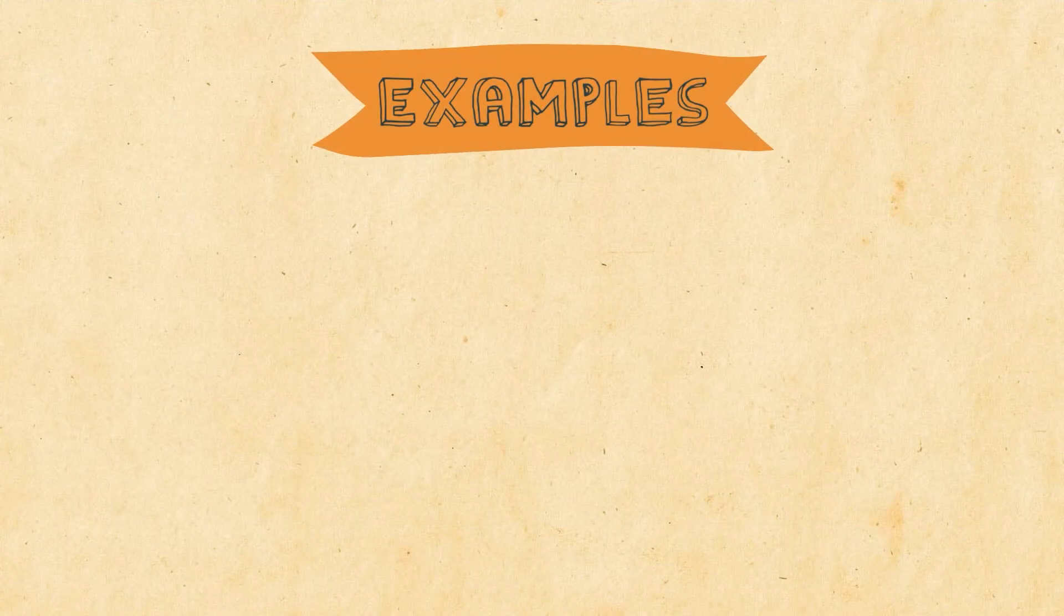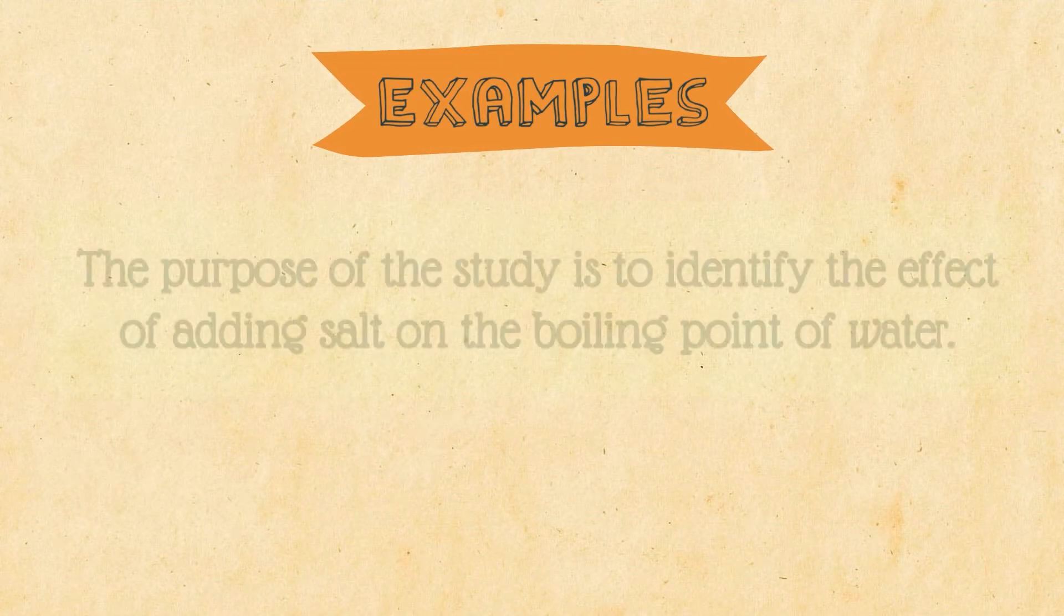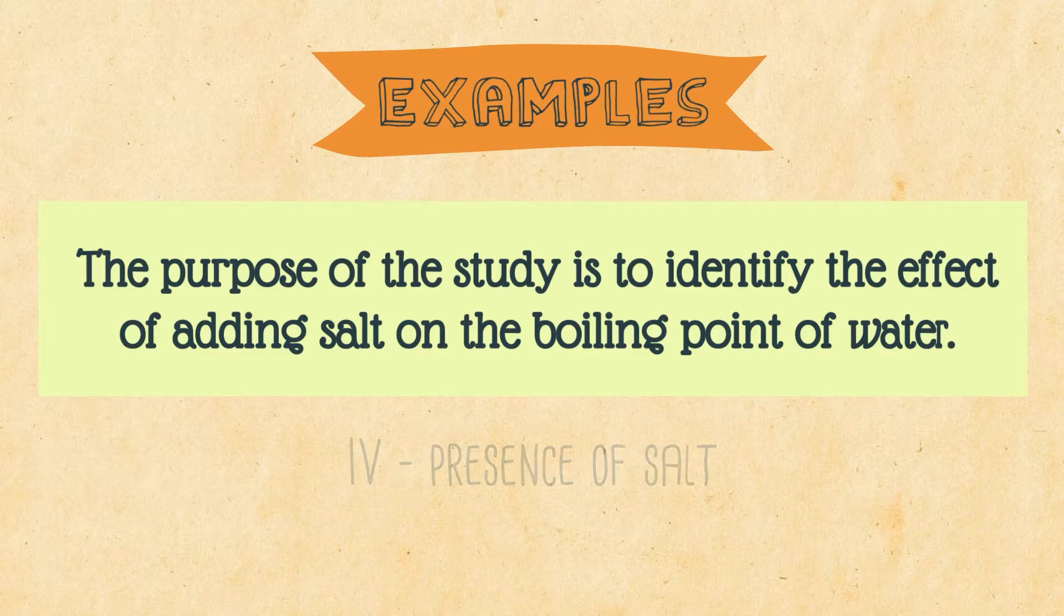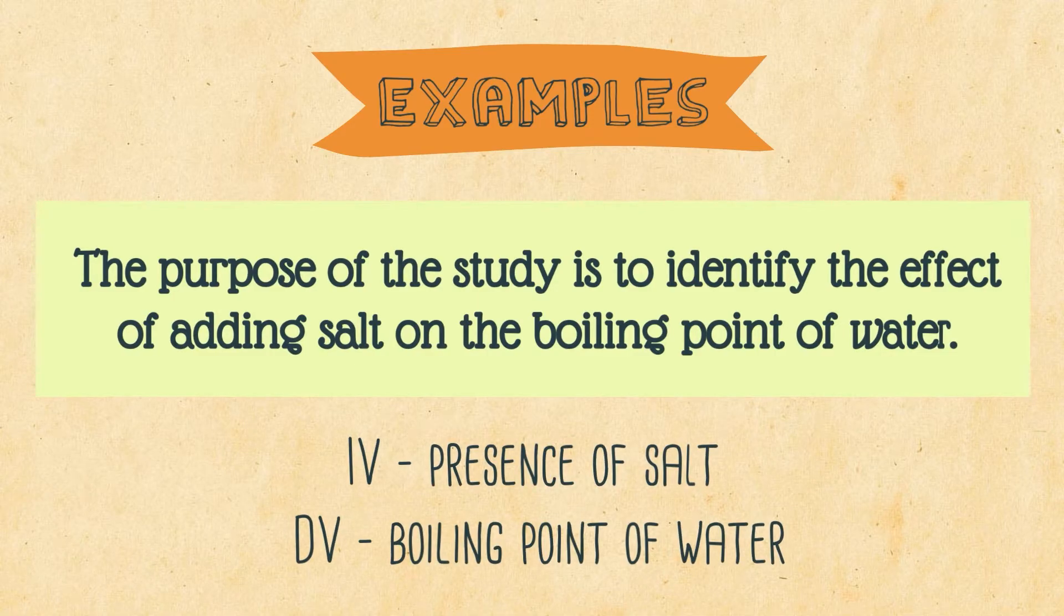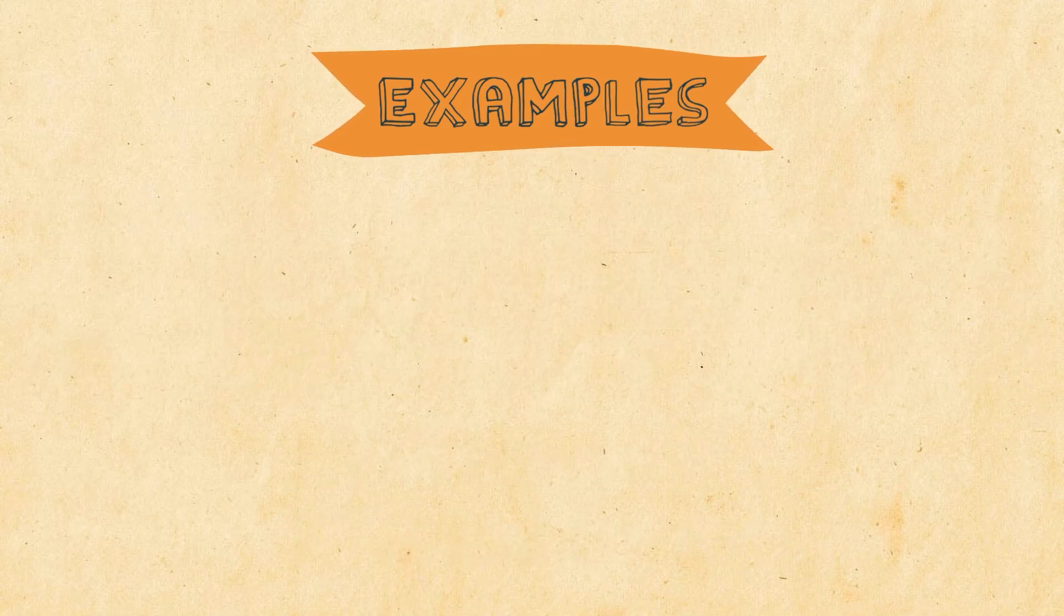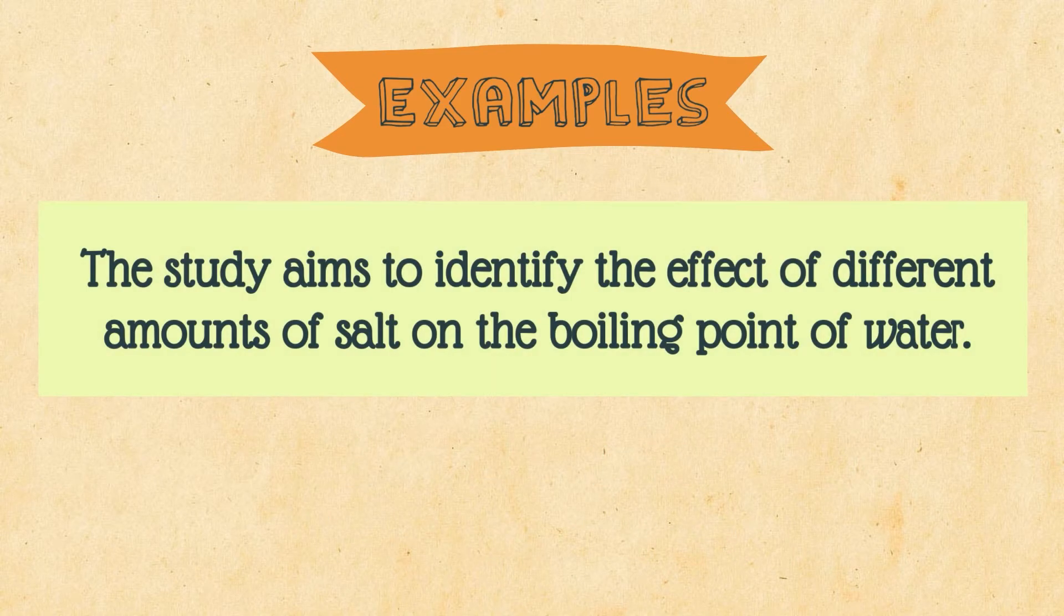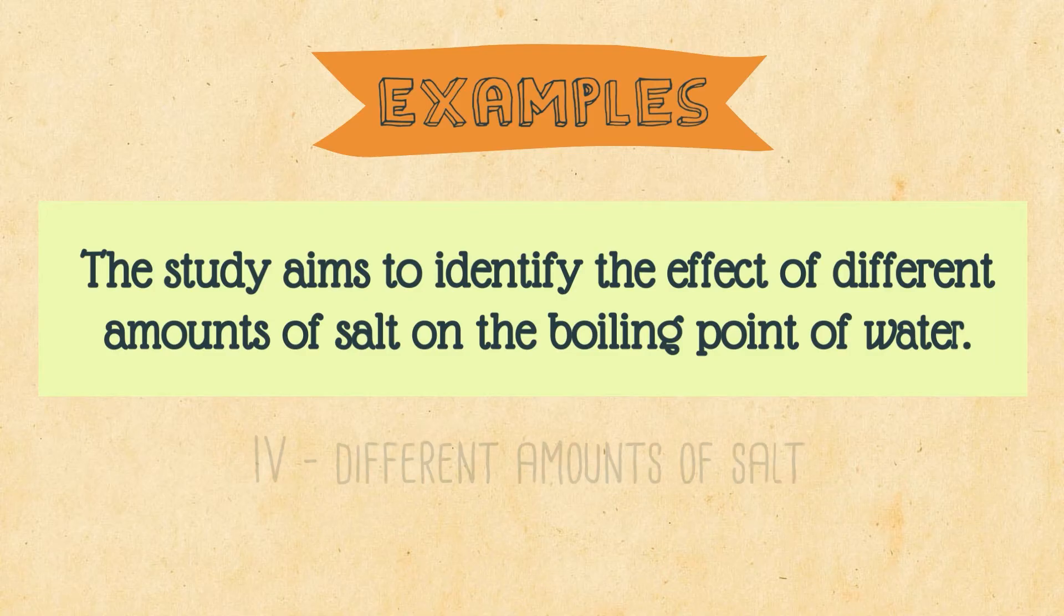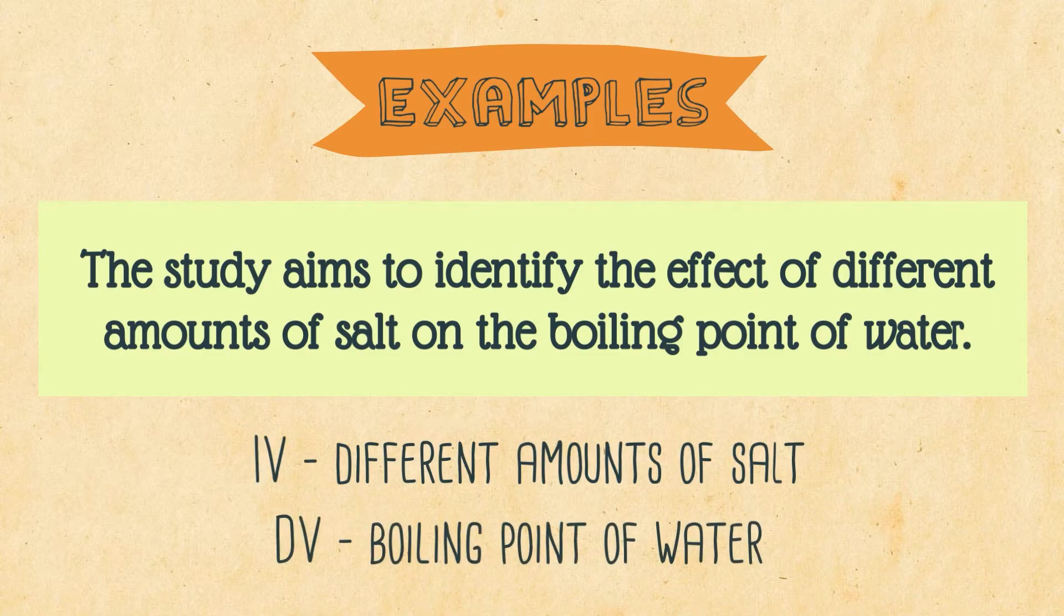Here are some more examples. The purpose of this study is to identify the effect of adding salt on the boiling point of water, where the independent variable is presence of salt and the dependent variable is the boiling point of water. Another example is, the study aims to identify the effect of different amounts of salt on the boiling point of water. The independent variable here is the different amounts of salt, and the dependent variable is still the boiling point of water.